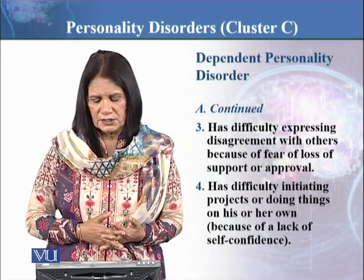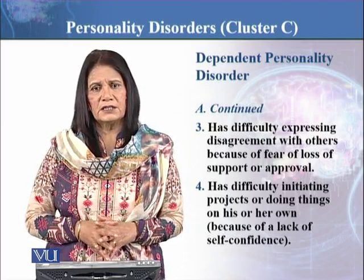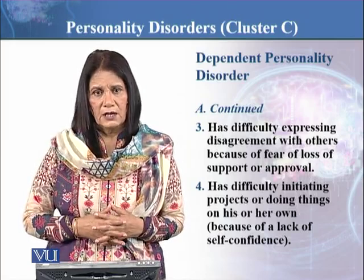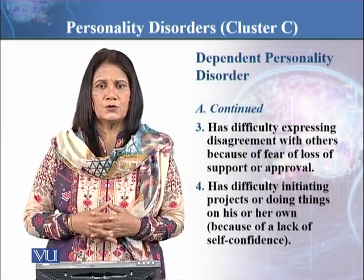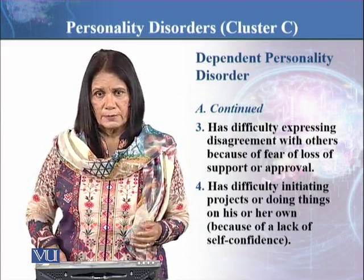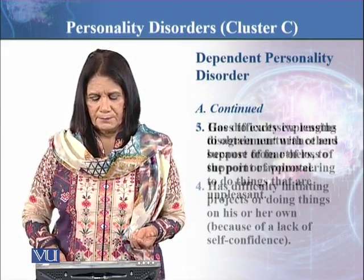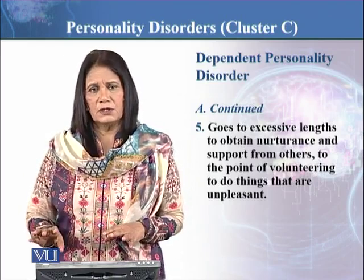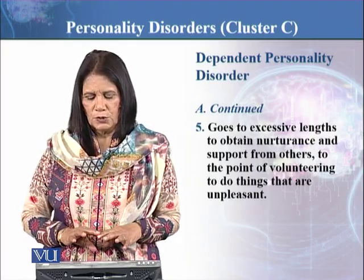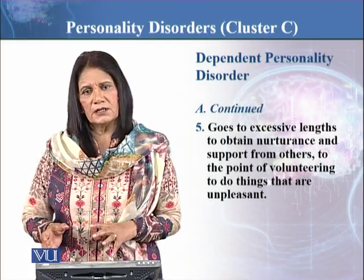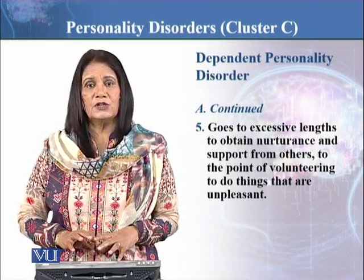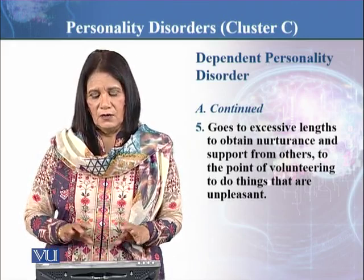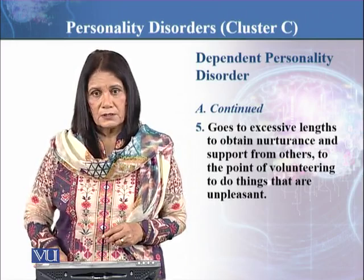Symptom four: has difficulty initiating projects or doing things on his or her own — کیونکہ اتنا confidence lack کر جاتے ہیں، اتنے indecisive ہوتے ہیں کہ چھوٹا موٹا یا بڑا کوئی بھی initiative نہیں دے سکتے۔ Symptom five: goes to excessive lengths to obtain nurturance and support from others — to the point of volunteering to do things that are unpleasant — وہ بھی چیزیں کرنے کے لیے تیار ہو جائیں گے جو وہ basically نہ کرنا چاہیں، کیونکہ انہیں دوسرے بندے کی بے انتہا ضرورت ہے.